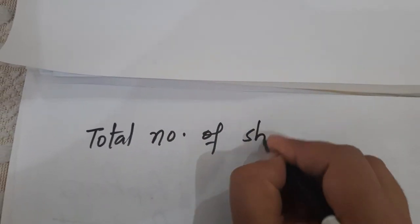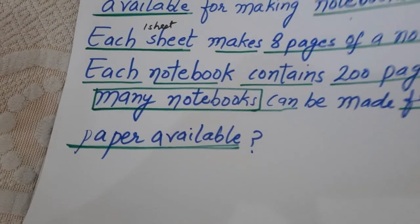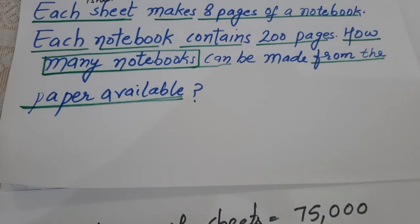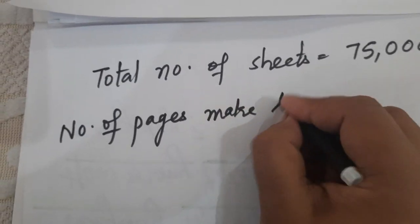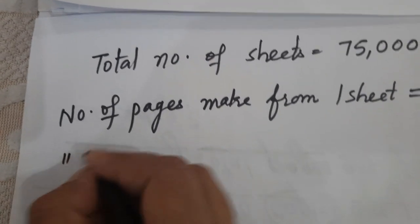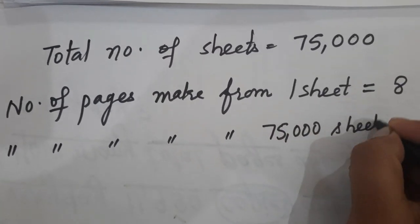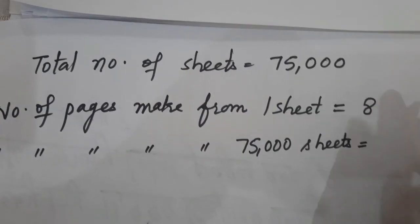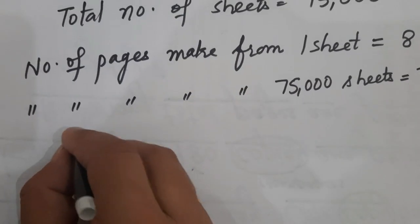Total number of sheets is equal to 75,000. Each sheet — one sheet — can make eight pages, so the number of pages made from one sheet is equal to 8. Then we have the number of pages made from 75,000 sheets. If one sheet can make eight pages, then we multiply 75,000 by 8.